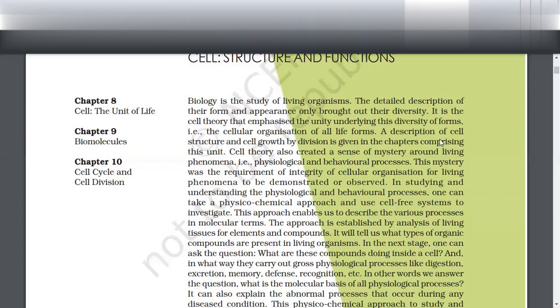In this chapter, very important is the cell theory. After the cell was discovered, nucleus was discovered, then the actual importance of the cell in our body was explained by two scientists through a theory called cell theory. Their names are Schleiden and Schwann. These two proposed the cell theory, explaining that various living organisms exist and their bodies are constructed from cells. But these two could not explain one thing.